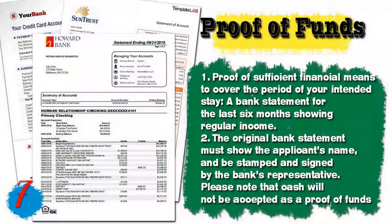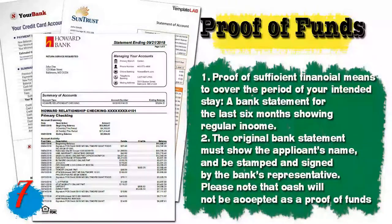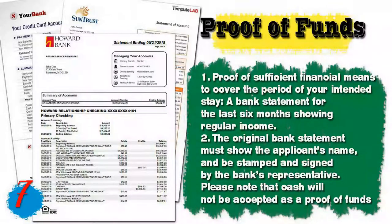Document seven is proof of funds. You will need proof of sufficient financial means to cover your intended stay — a bank statement for the last six months showing regular income, stamped and signed by the bank's representative with the applicant's name. Cash will not be accepted. If you don't have a bank account, proof of any assets can also be presented.